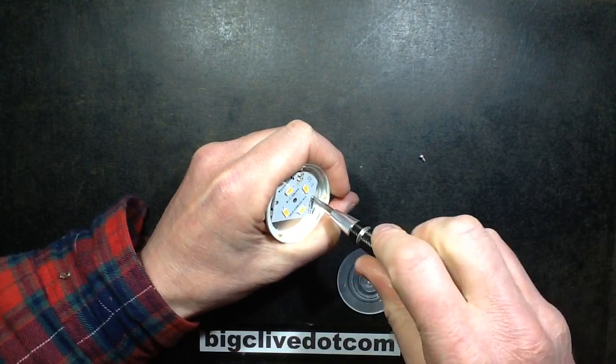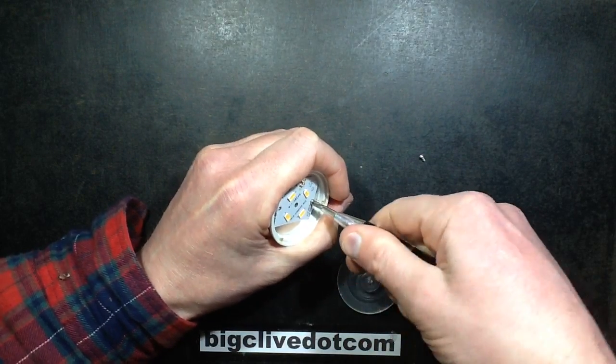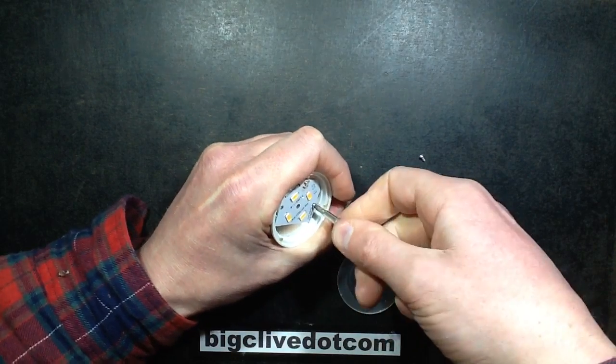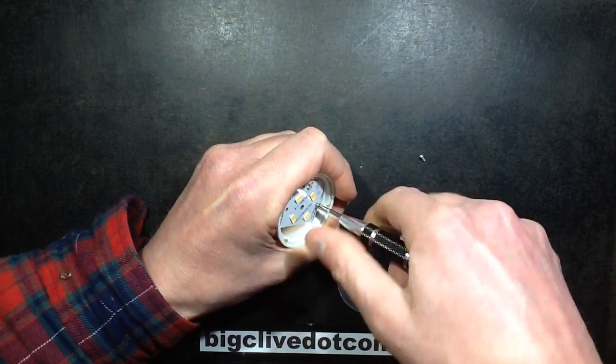And the reason they've used the multiple LEDs is because it's a capacitive dropper, which is unusual for Philips. Maybe it was their attempt at a fairly economic light.